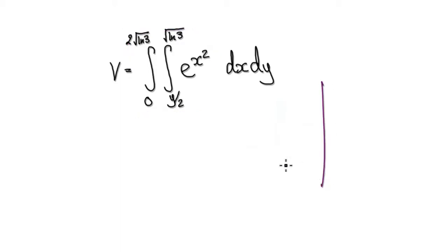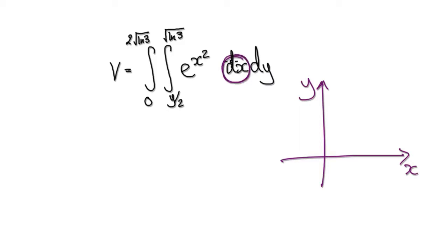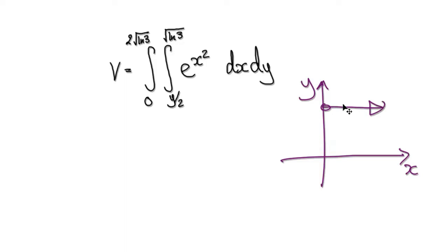So let's try and understand the region. This is our xy plane. At the moment, as it currently stands, we are integrating with respect to x first, which means we are moving parallel to the x-axis. This means it's x equals something and then x equals something — so that's our first part here.